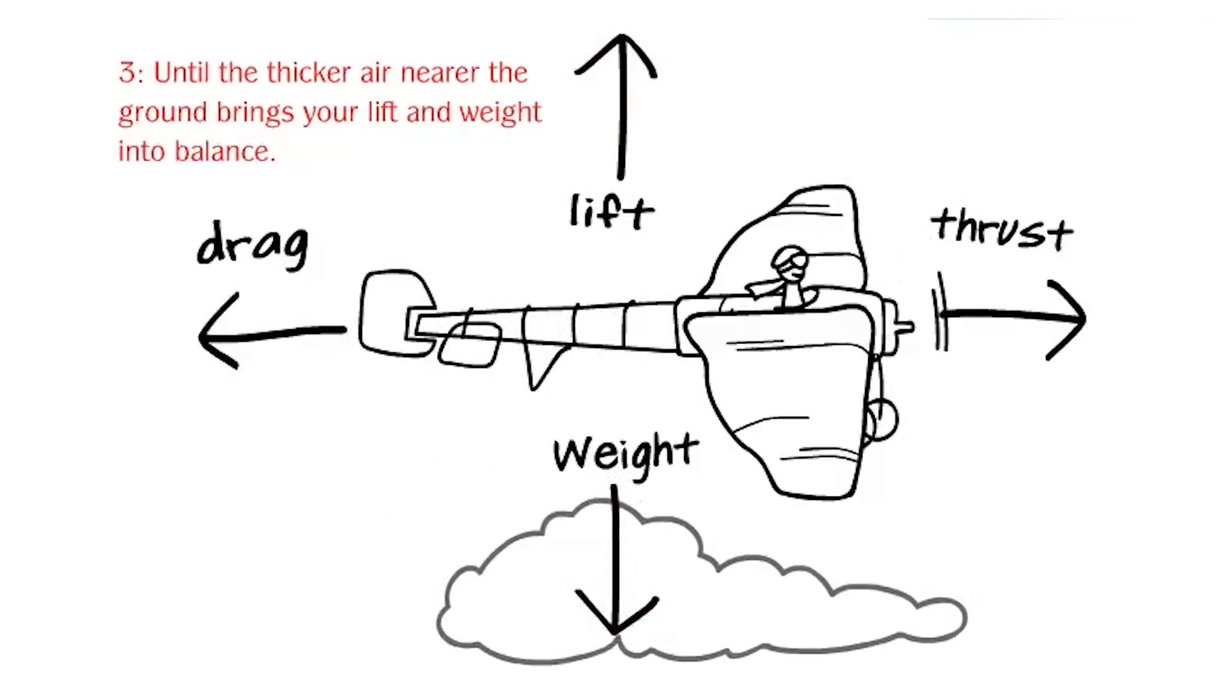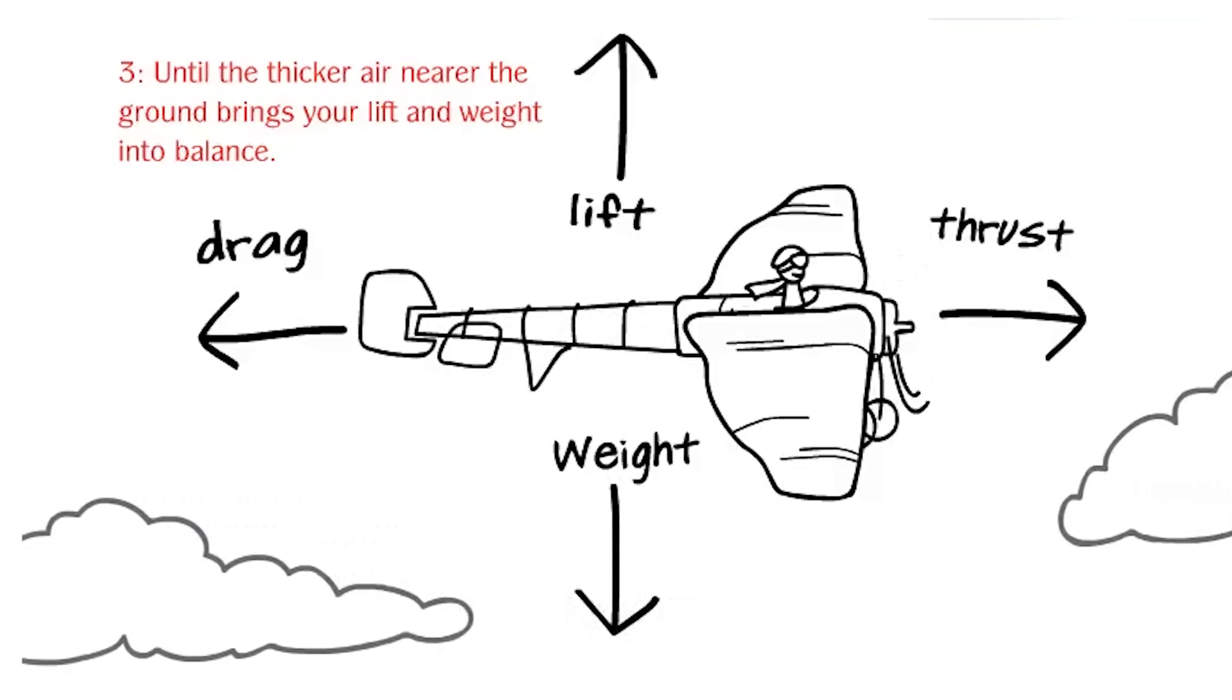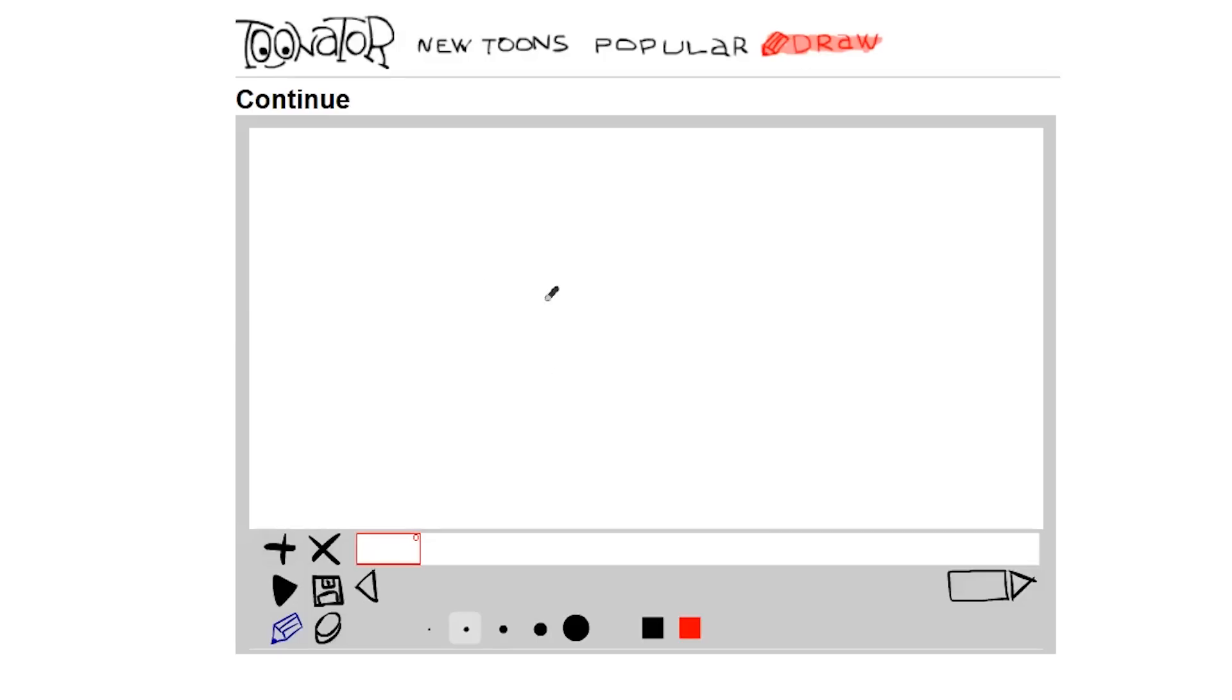Now that you are in tune with your inner aeronautical engineer, get in toonator.com, where you can create a digital flipbook. You can see the marks from the previous slide, so you can accurately position your current drawing in relation to the prior one and make this stick figure's movements more realistic. Isn't it just mesmerizing?